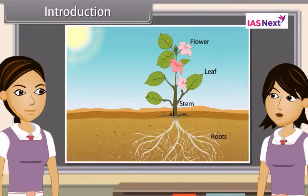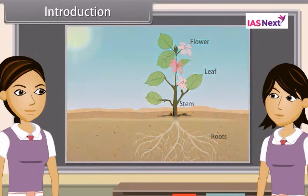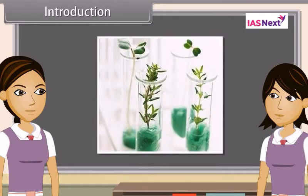As we already know, plants do not have a nervous system and sense organs like eyes, ears or nose like animals have. But they can still sense things like light, gravity, chemicals, water and touch by actions of hormones on them.